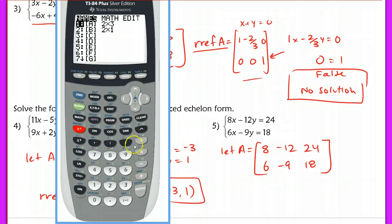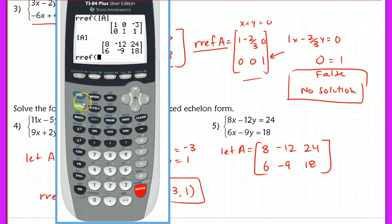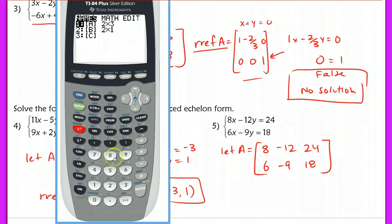Let's do row-reduced echelon form of matrix A. Second matrix, scroll over to math, and then down to RREF. This takes my calculator a long time because it's a little slower than yours. Yours should go much quicker than mine.